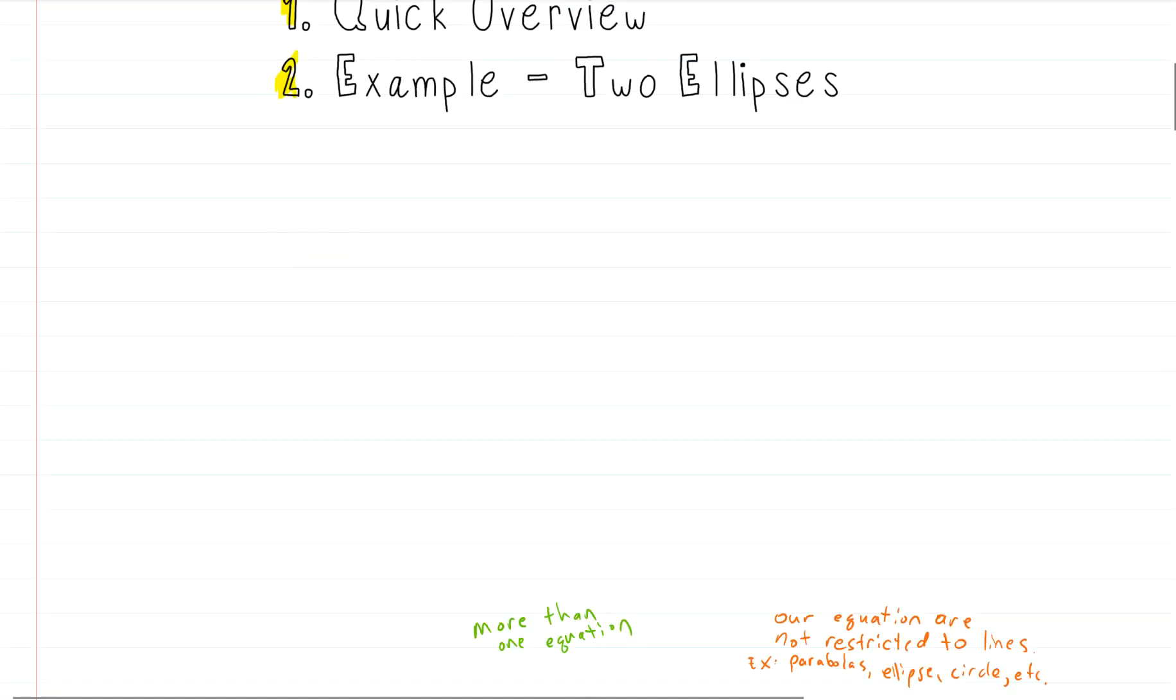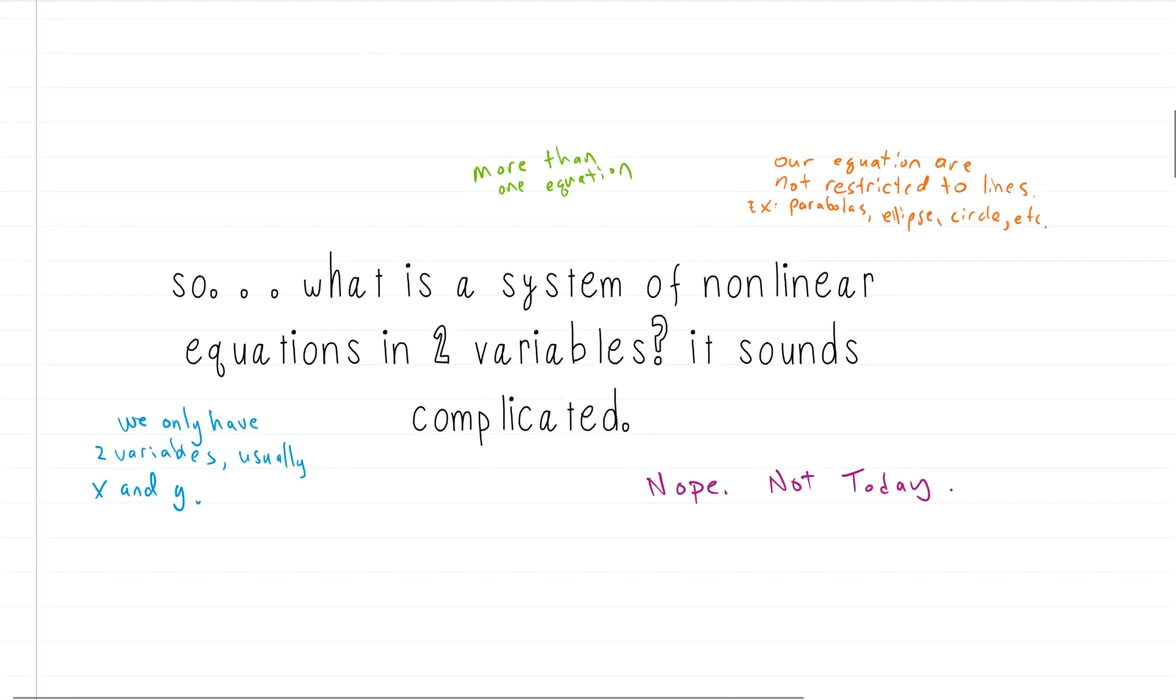So let's start with our review. Well, what is a system of nonlinear equations in two variables? It sounds kind of complicated. Two variables just means we only have two variables in our equations, and we'll have two equations, two variables, usually an x and a y. That's not bad. You guys see x's and y's all the time.